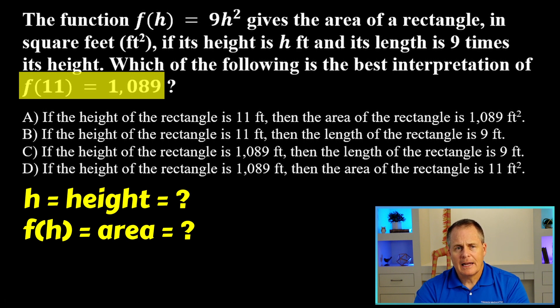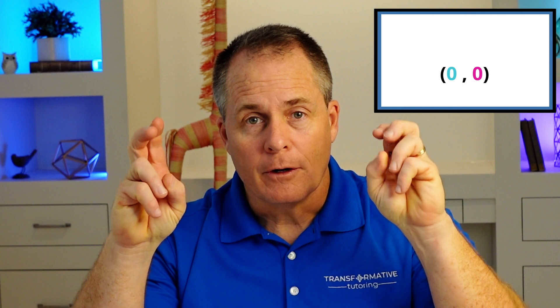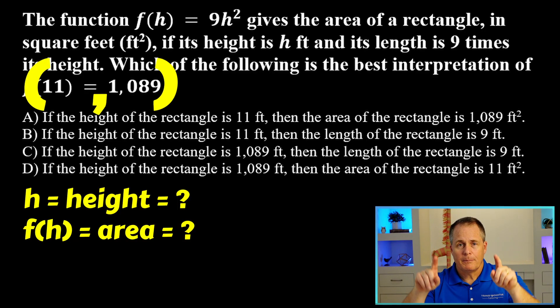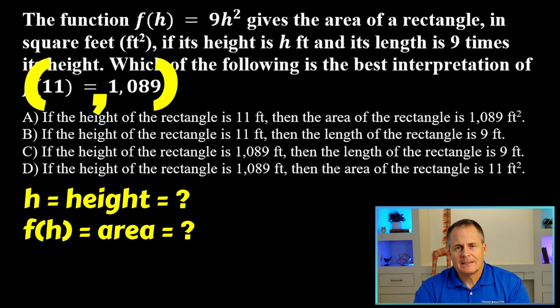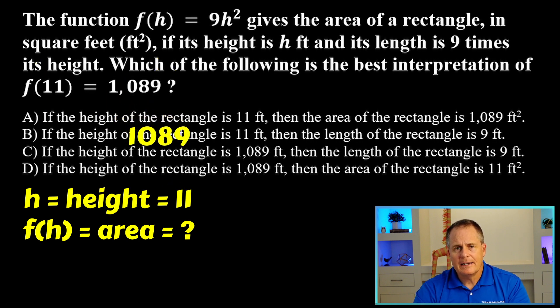So look at the very last part there. f(11) = 1,089. That's what I call an ordered pair in disguise. If you just put parentheses in there and change it into an ordered pair, it says 11 comma 1,089. And so 11 is like the x value and 1,089 is the y value. And so that's your ordered pair. The 11 is the height.